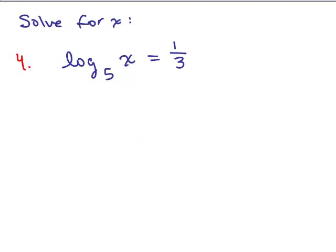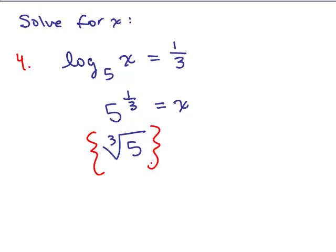Let's do one more. Try this on your own. This one's actually easier. Just have log base 5 of x equals 1 third, so 5 to the 1 third equals x. So that's what x equals, 5 to the 1 third, or you could write it as the cube root of 5, and that's your answer. Simple. Okay, we'll do some more problems and continue learning some more things we could do with logs on the next video.